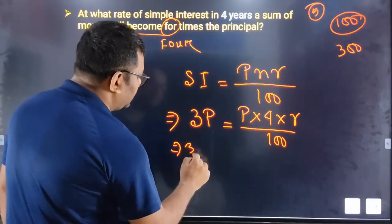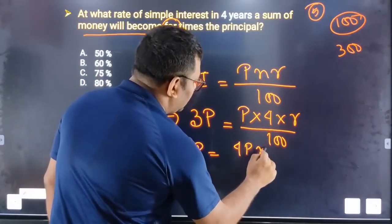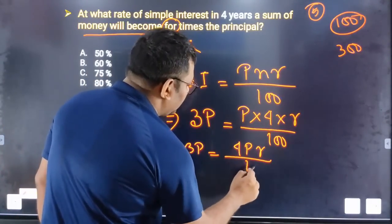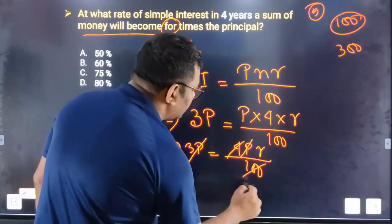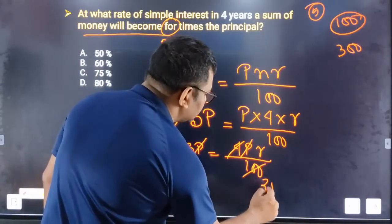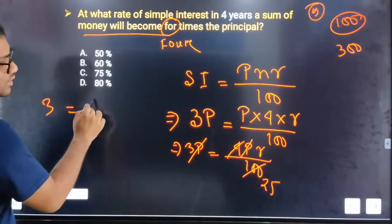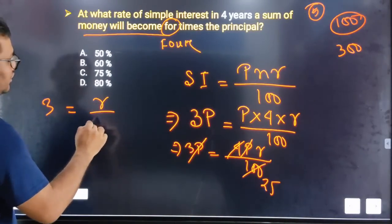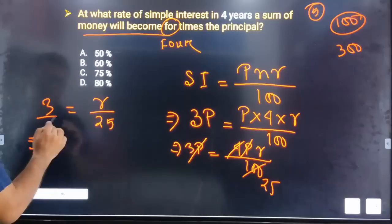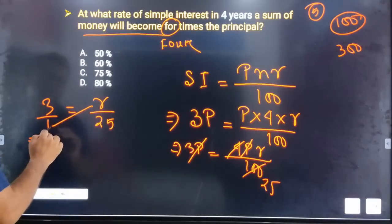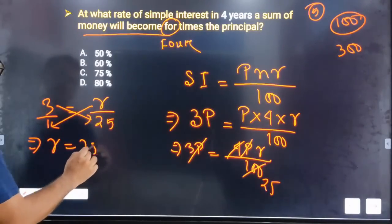So 3P is equal to 4PR divided by 100. P and P cancel out. So 4R equals 300, which means R divided by 25 equals 3. Cross multiplication gives R equal to 75.